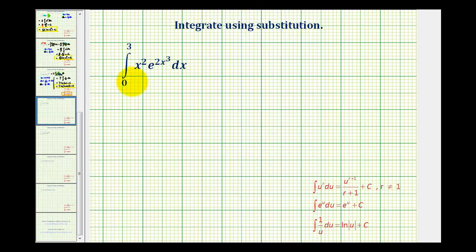We want to integrate the following definite integral using the substitution method. So the first step is to identify u so that u prime would also be part of the integral.